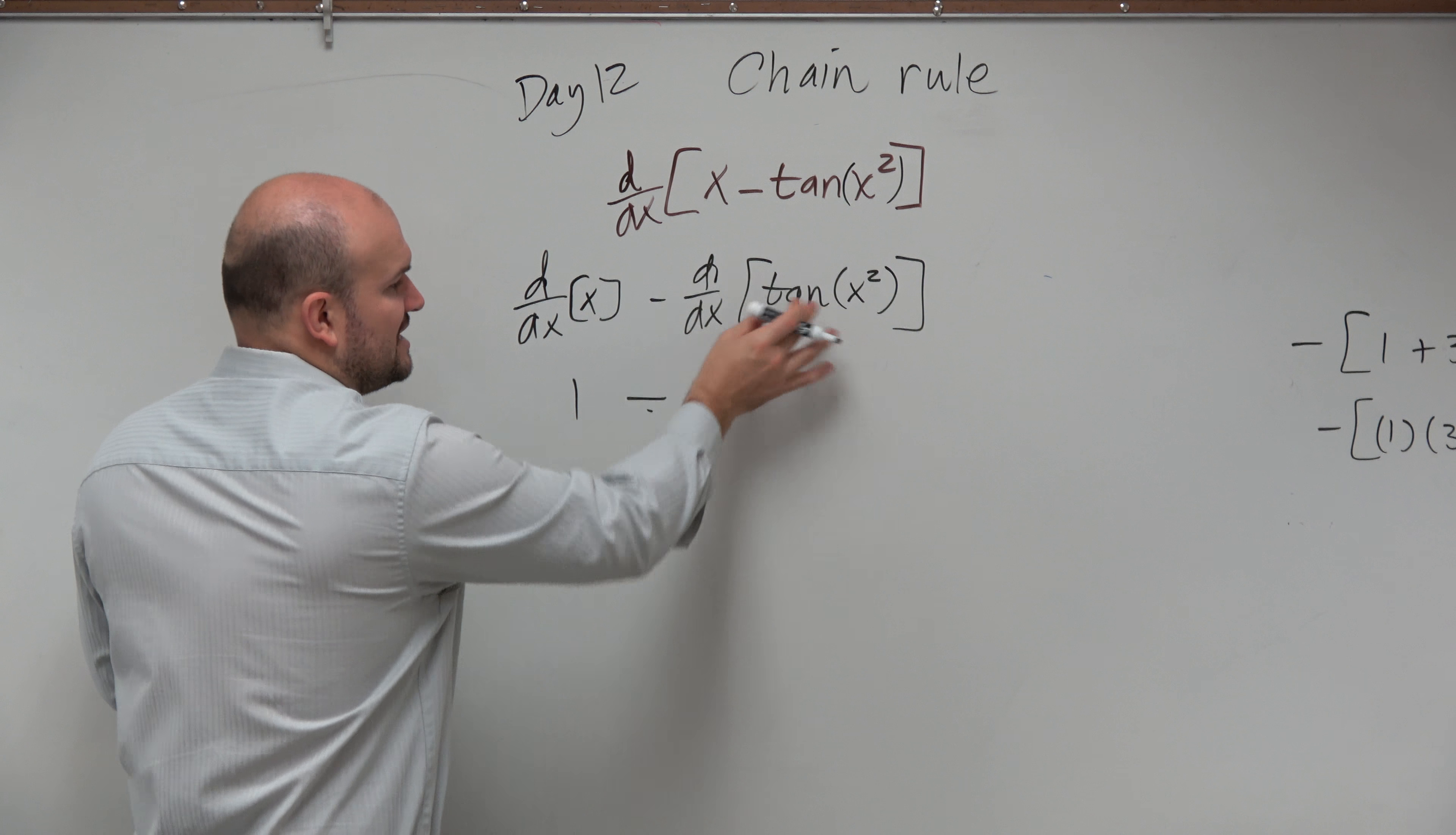So the derivative of tangent is going to be secant squared of my inside function, which is x squared. And then we multiply that by the derivative of my inside function. The derivative of x squared is 2x. Then I can just rewrite all of this as 1 minus 2x secant squared of x squared. Okay.